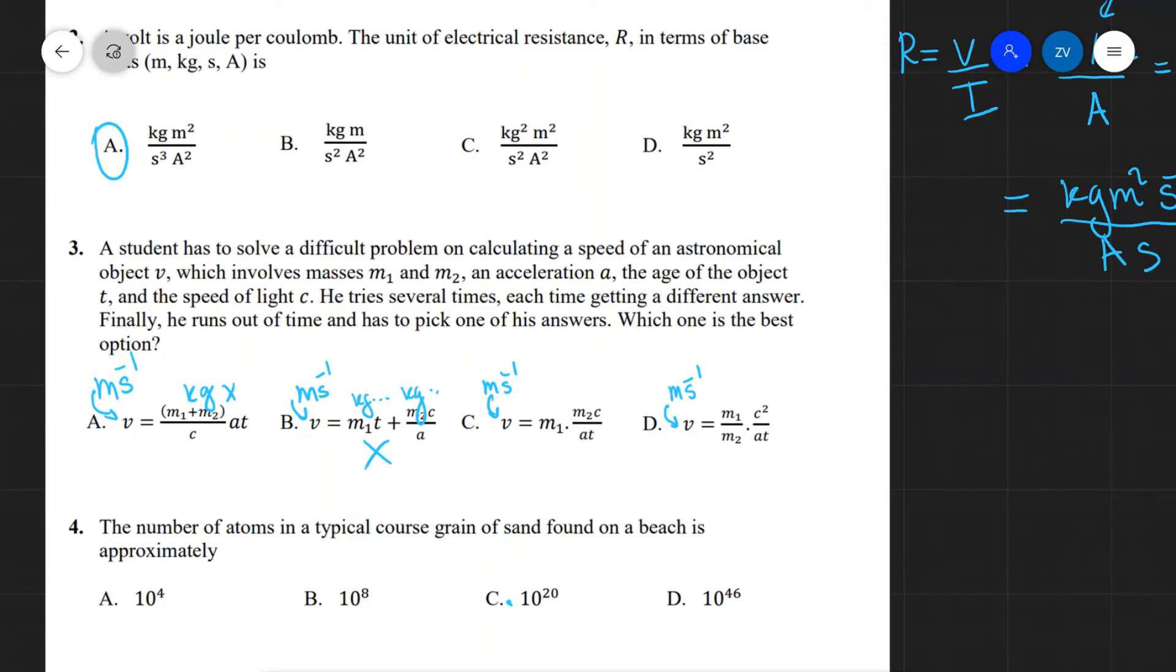Looking at c, we're going to have kilograms squared. So that's even more far off from the correct answer, because that's going to multiply m1 and m2. So the only correct answer will have to be d.